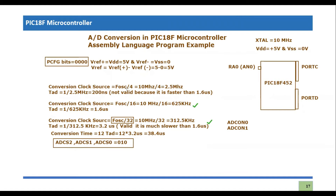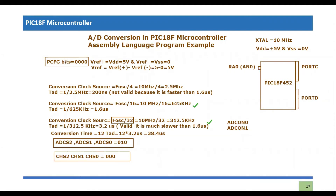One thing remaining is the channel selection. Out of eight analog channels, we need to select analog zero. The channel select bits CHS[2:0] should be 000. It is a three-bit value that can select any of eight channels, and since we are using channel zero the combination is 000.